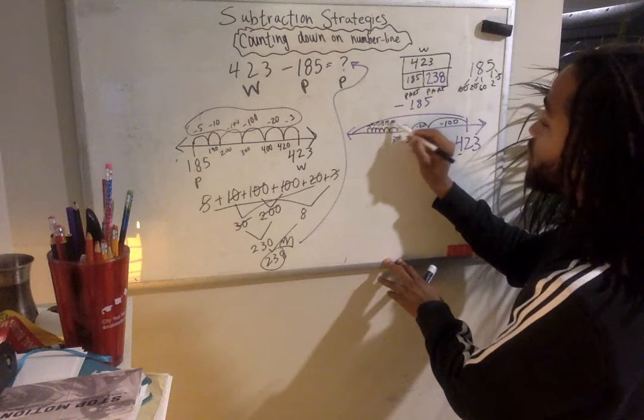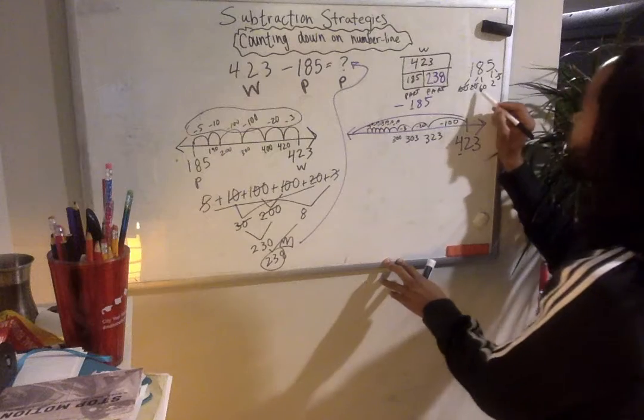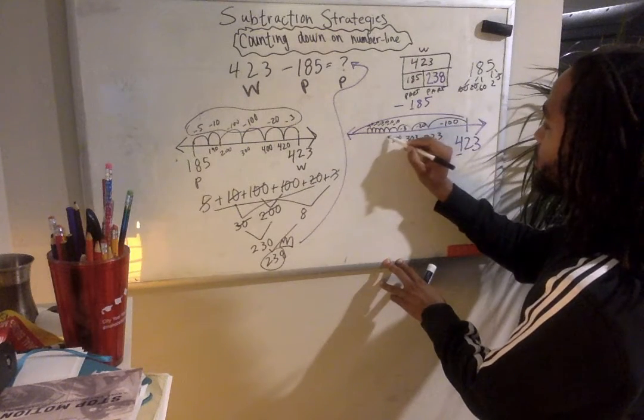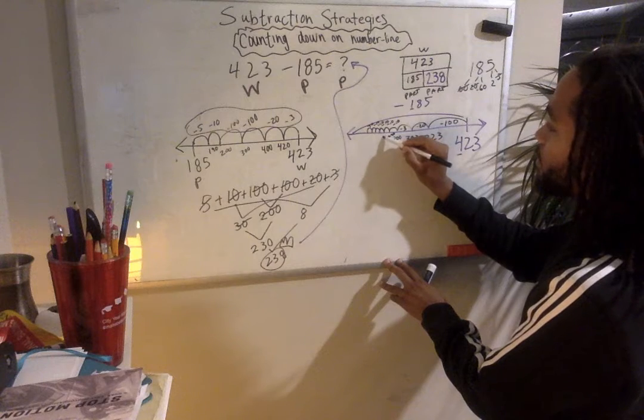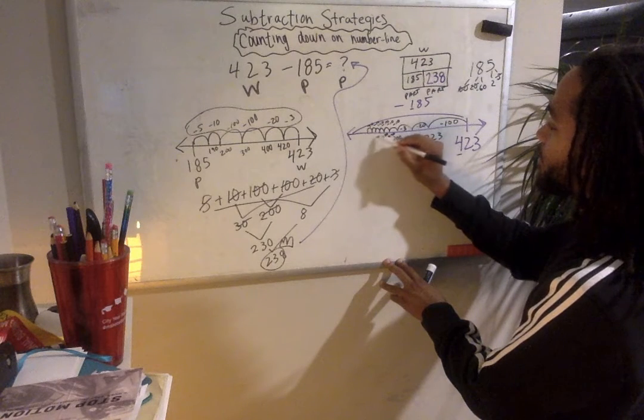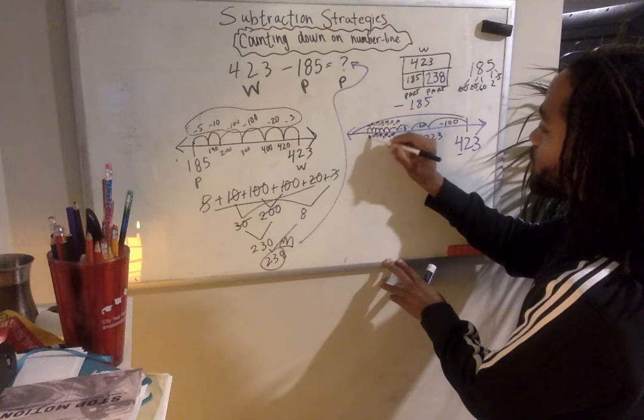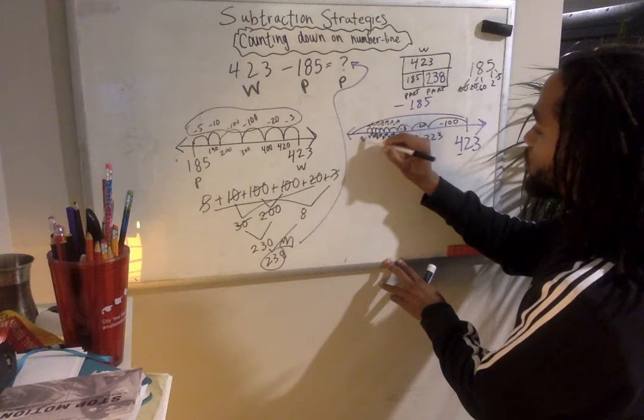Or if you really know, you can do minus 60 all by itself. But this is 290, 280, 270, 260, 250, 240.